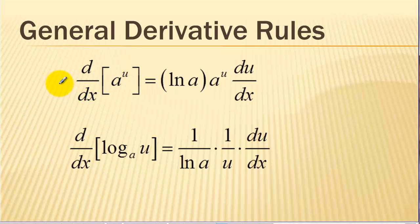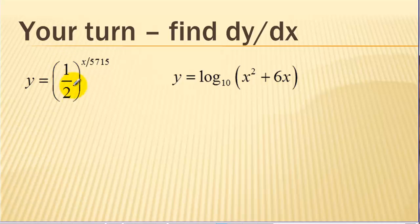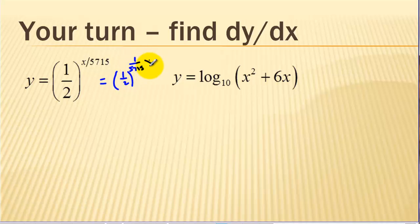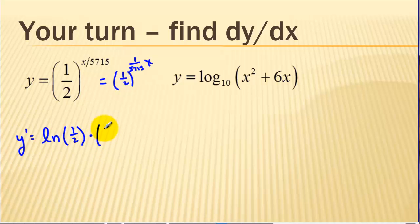The first problem applies the exponential function rule, then we'll apply the log rule, and then work one application problem. Here 1/2 is my base — that's my a. Remember when we go to take the derivative of our exponent, x over that number is the same thing as that fraction times x. So we don't have to use a quotient rule to take the derivative of our exponent. Applying our rule, we have the ln of our base times essentially the original function, then times — using the chain rule — the derivative of our exponent. This is a constant times x, so we just have our constant.